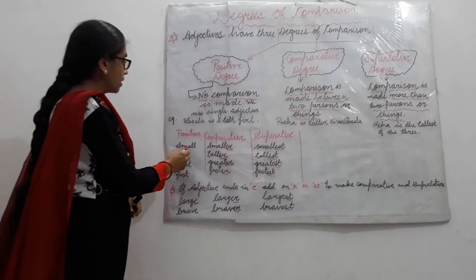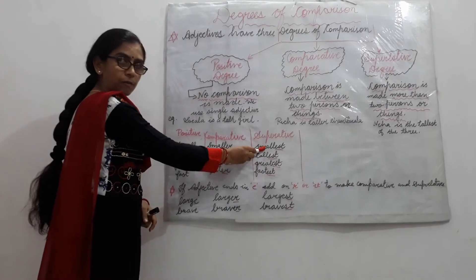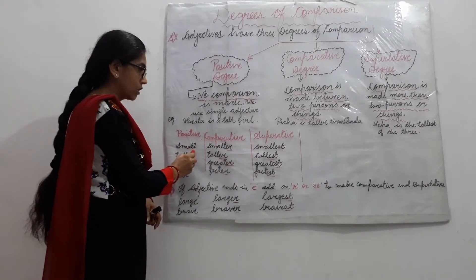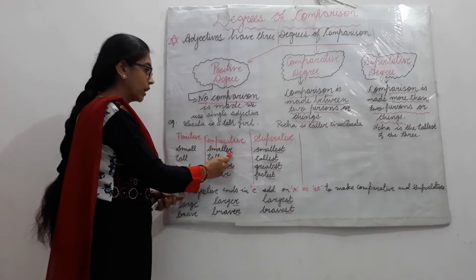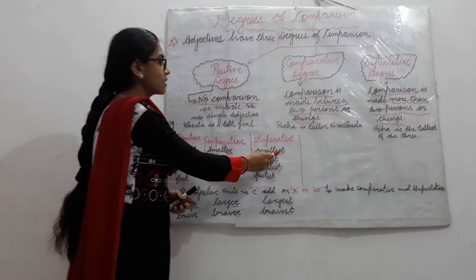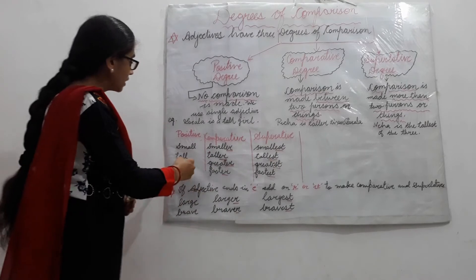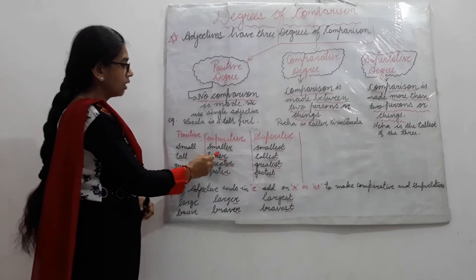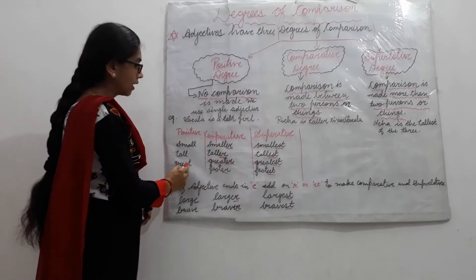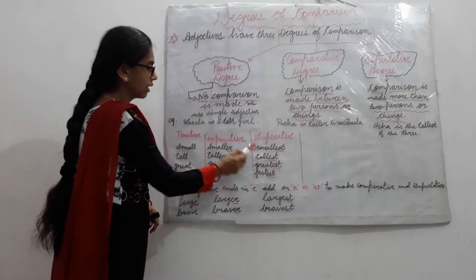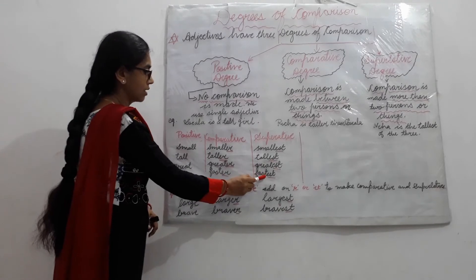See this example: small, smaller, smallest. 'Small' is positive. Add -er, 'smaller' becomes comparative. Add -est, it becomes superlative. Similarly: tall, taller, tallest. Great, greater, greatest. Fast, faster, fastest. In all these comparative forms we add -er, and in superlative we add -est.